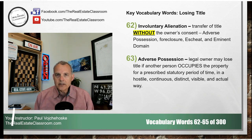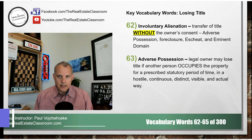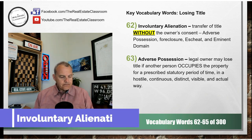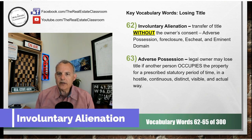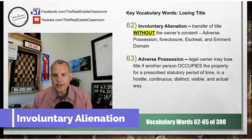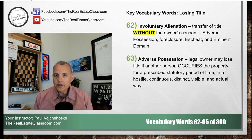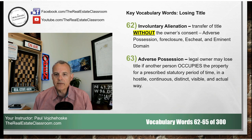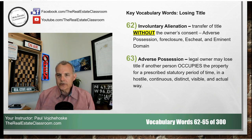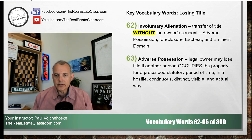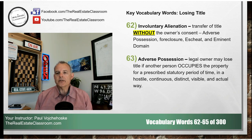It starts with number 62, which is involuntary alienation. The definition of involuntary alienation is the transfer of title — and remember, title in real estate means ownership — so it's the transfer of ownership without the owner's consent. There are four main ways that happens.